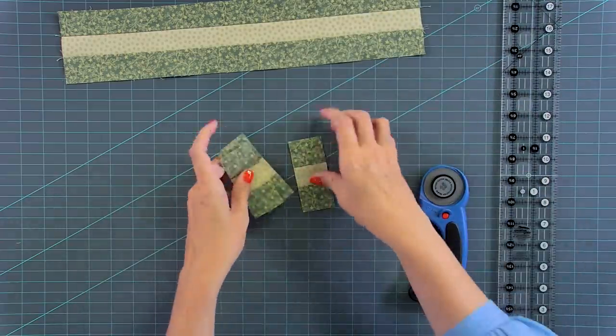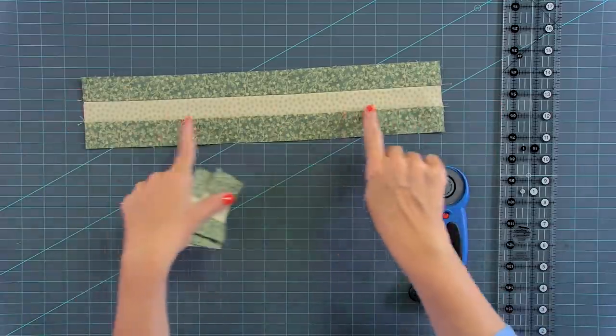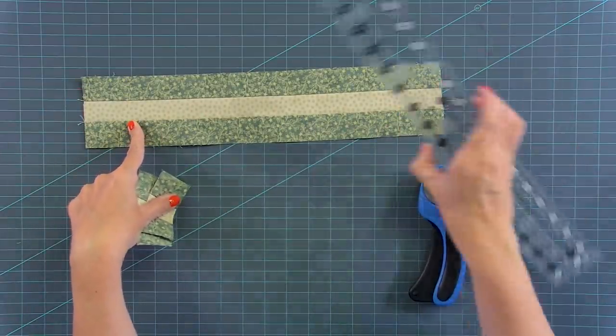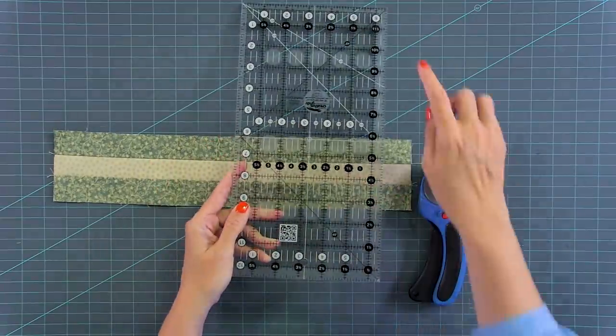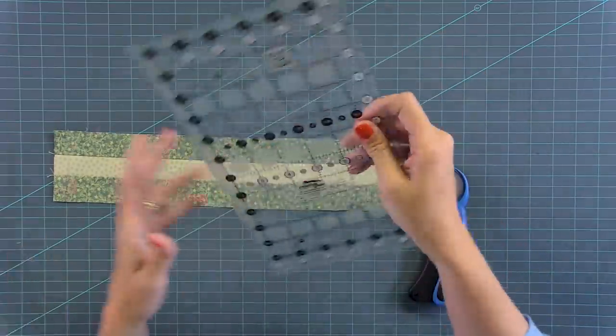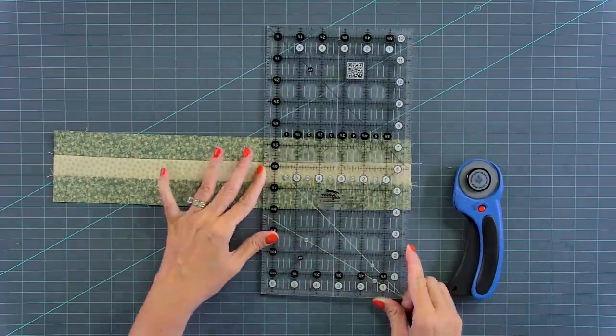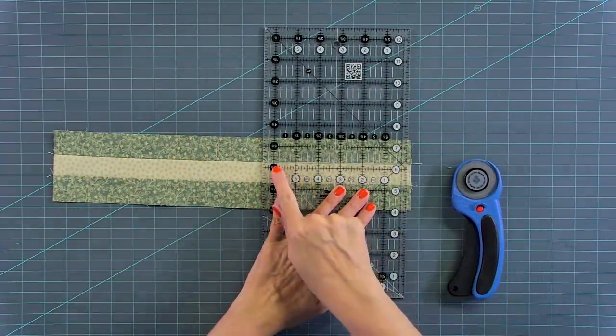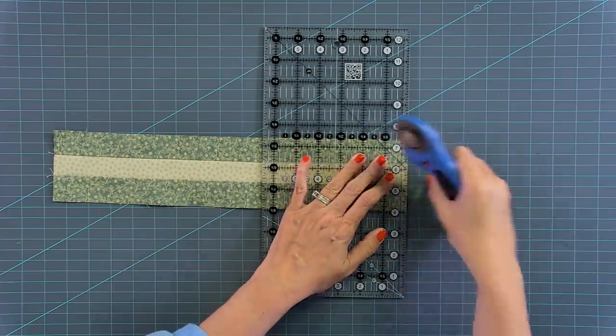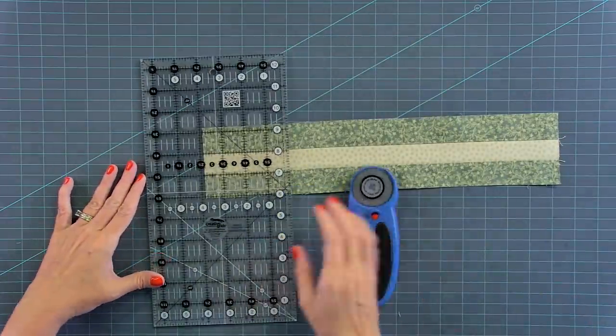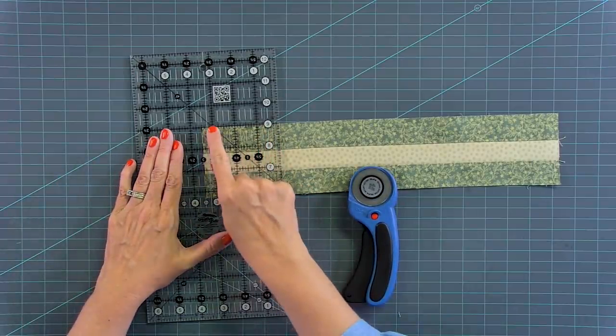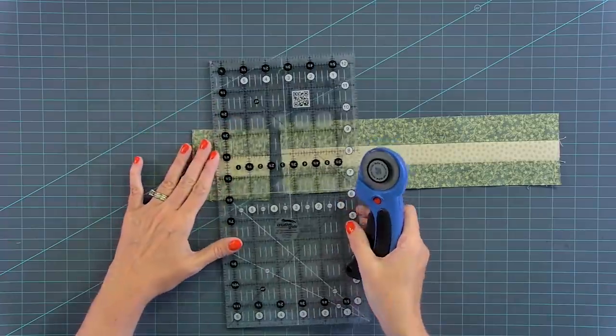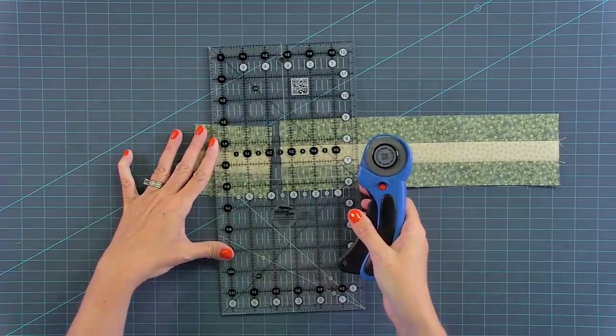And then we're going to grab a different ruler so that we can cut this into four, three and a half inch rectangles. And this ruler's just not wide enough to do that. So for this one, I'm going to use my six and a half by 12 and a half inch ruler by Creative Grids. And I use this ruler quite a lot. And again, to make your starting cut, just cut that. And we're going to sub cut four three and a half inch squares. And when you're cutting, you can actually line up the top and the left. And you'll see that's going to give you perfect three and a half inch squares.